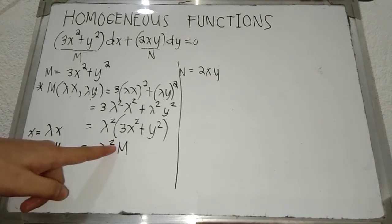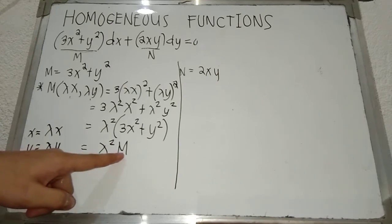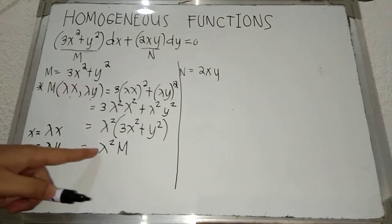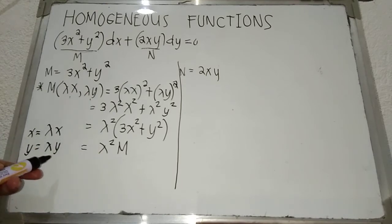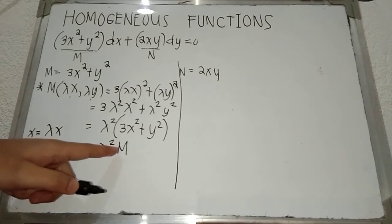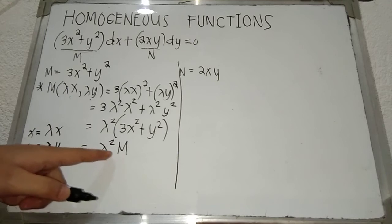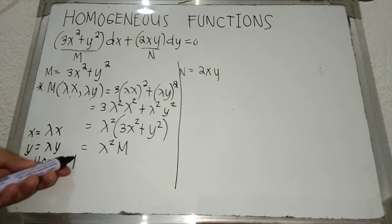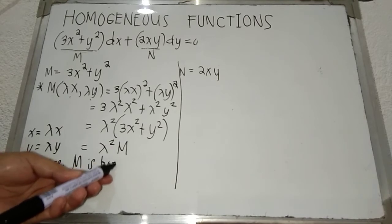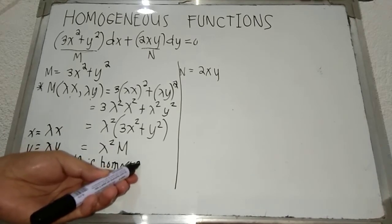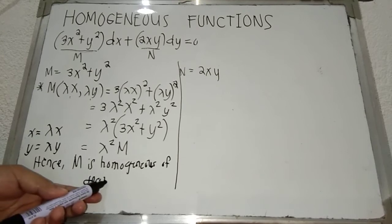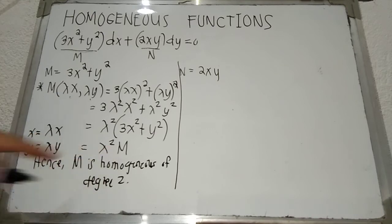The exponent of lambda is what we call the degree. Since M(lambda x, lambda y) equals lambda²·M(x, y), we would say that M is homogeneous of degree 2.